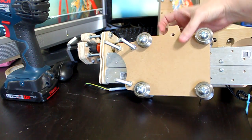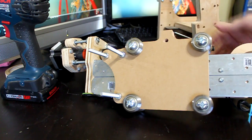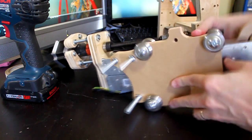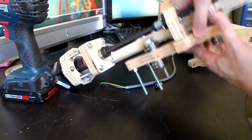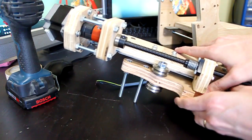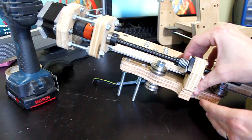If the extruder is already installed, it might be easier to remove the anti-backlash nut assembly while sliding this assembly onto the Z axis rails.